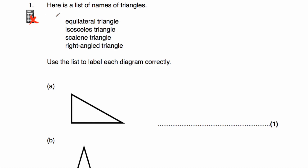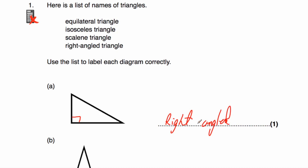Let's have a look at question number one. Question one says: here's a list of names of triangles — equilateral, isosceles, scalene and right-angled. We've been asked to use the list to label each diagram correctly. So we've got our first triangle, and as you can see, it's a right-angle triangle. So we're going to write down right-angled triangle.